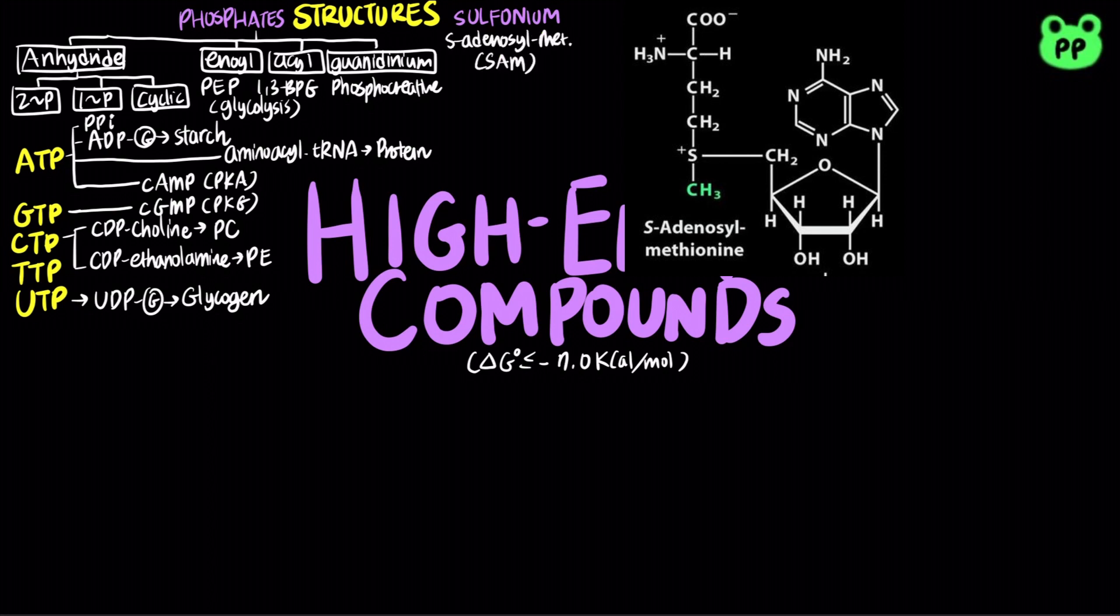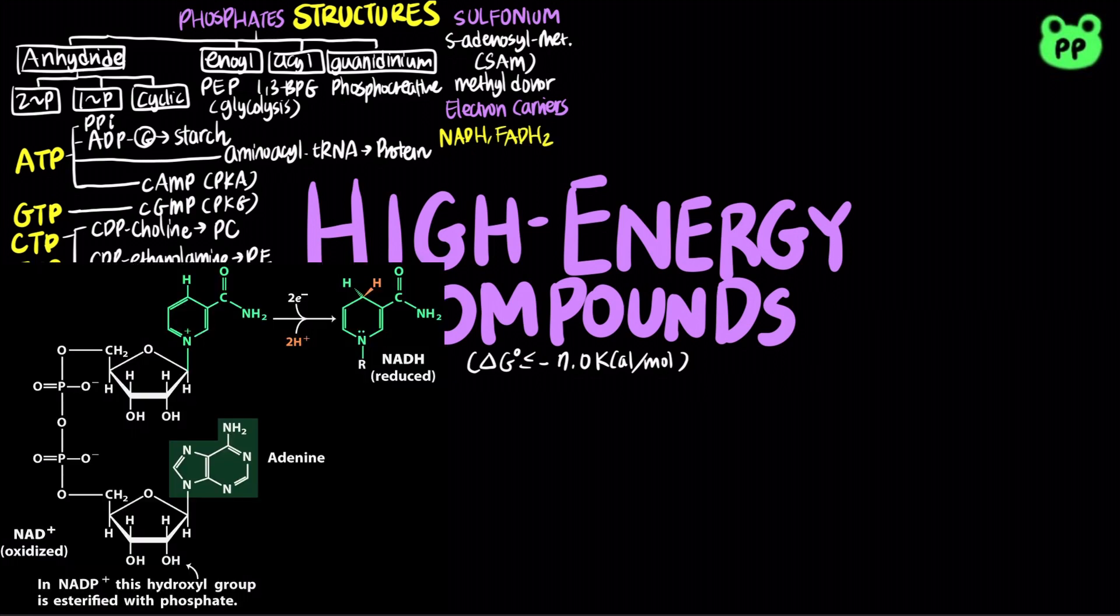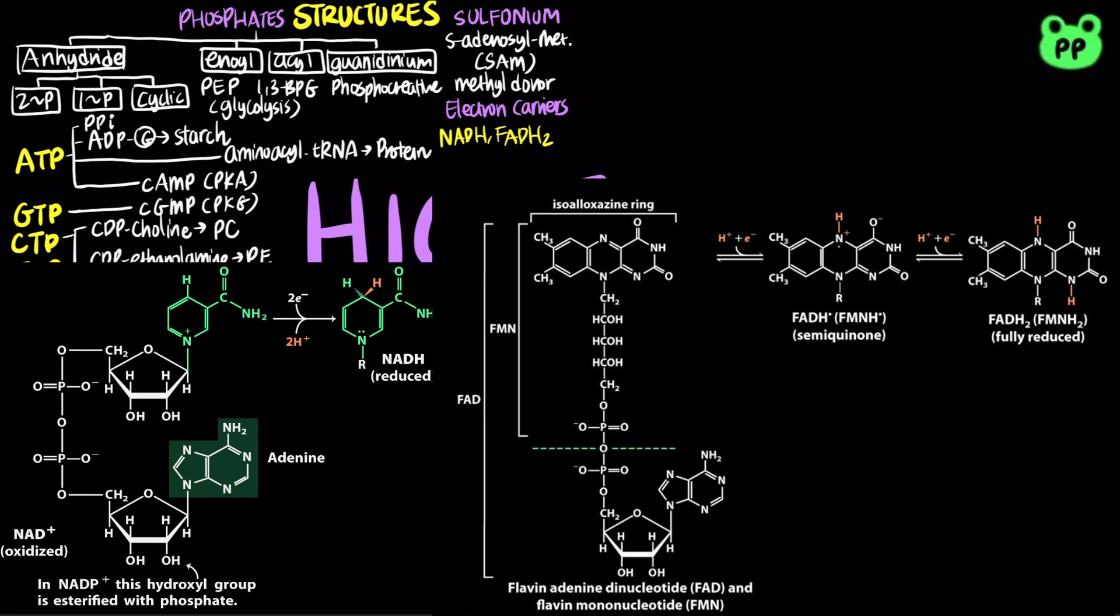The last category of high energy compounds are electron carriers that are capable of donating electrons in oxidation reduction reactions. Energy from catabolic pathways are funneled into NAD+ and FAD, generating NADH and FADH2 that in turn donate electrons to the electron transport chain to drive oxidative phosphorylation. On the other hand, hydrolysis of NADPH provides energy for anabolism or biosynthesis of macromolecules, as well as detoxification.